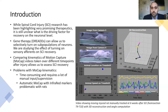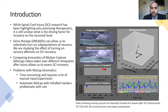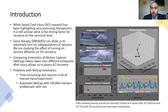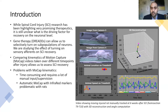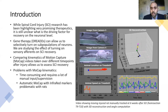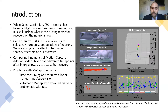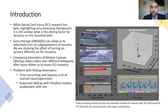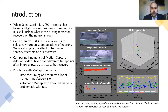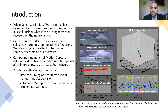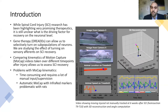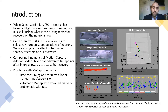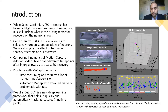However, mocap kinematics can be quite problematic because they have mostly been done manually, which can be very time consuming. It can take a lot of manual input and a lot of supervision. And while some automatic mocap systems have been put in place, they usually use infrared markers, and these can be a problem with rats because they tend to chew the markers off.